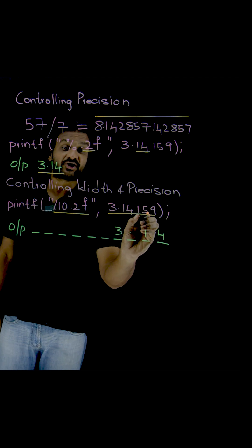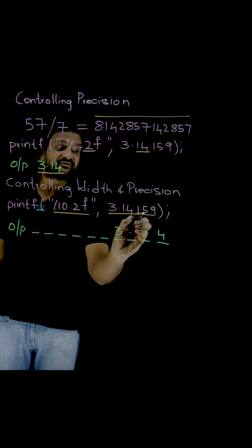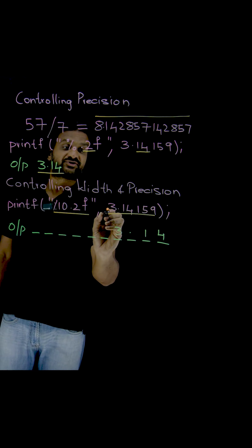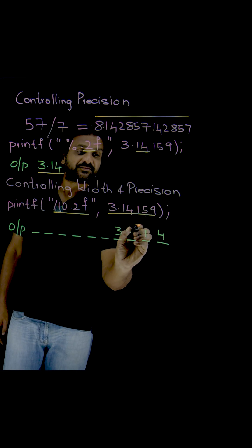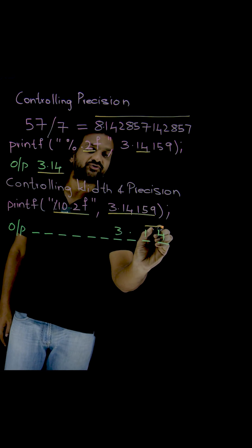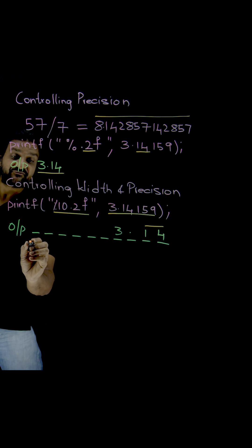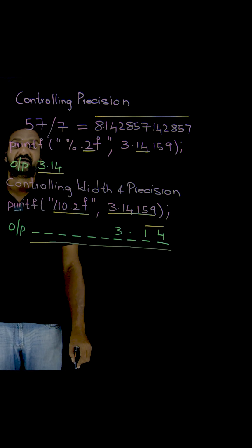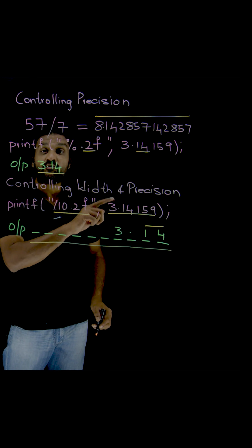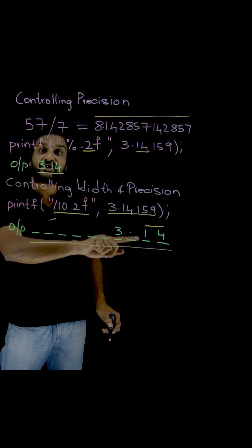For what value am I controlling? This is the value I am controlling: 3.14159. Now, after the decimal point, we are going to have only two values and the minimum width is 10 spaces. And it is right aligned.